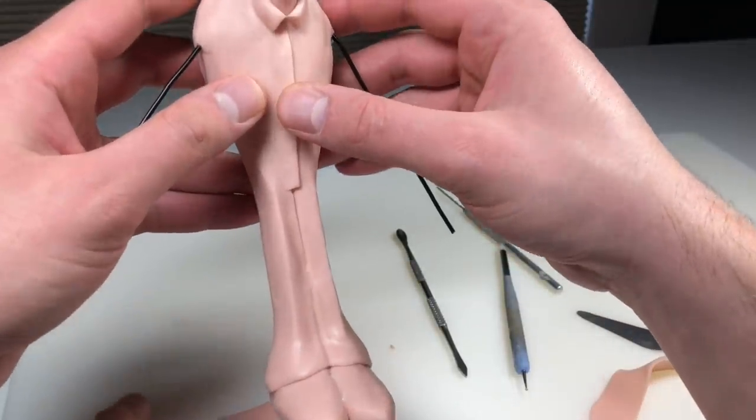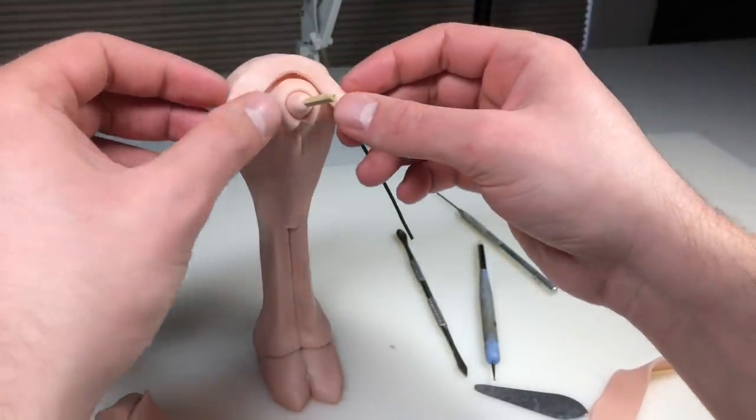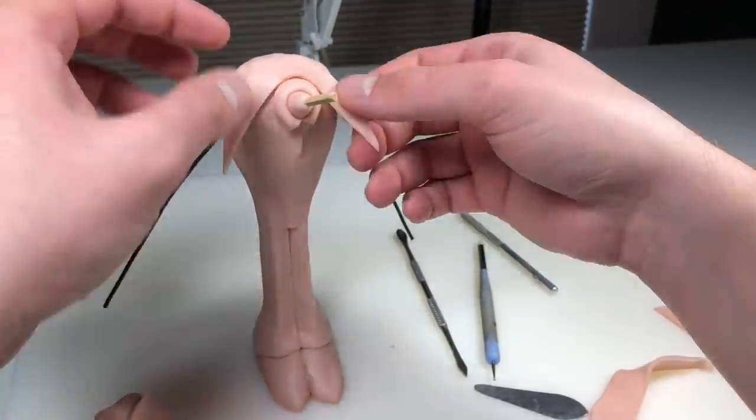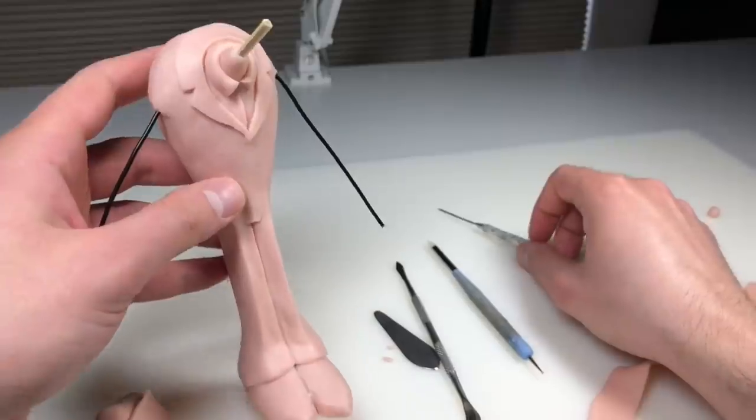Now it's time to add his lab coat. I'm just smoothing out the bottom half of that line because that's where his coat is going to close in the front. Now I'm adding the lapels, cutting out a couple notches in them, and then refining a couple things before moving on to the next step.